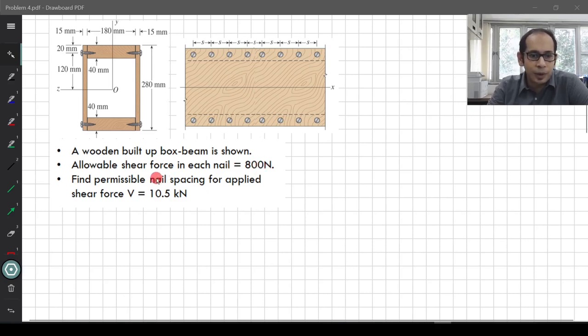What you are supposed to find is the permissible nail spacing. That is this S. This is the cross section view and this is the side view. Side view means if you are looking from here. This is a continuous board. If you are continuous board when you are looking from here, this is a nail and behind that there is a nail, behind that there is a nail.